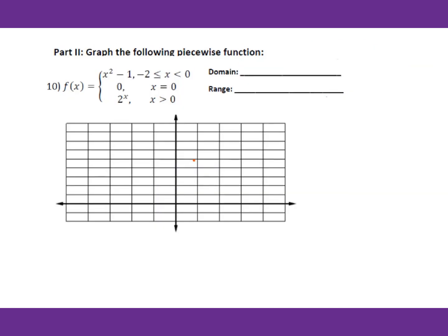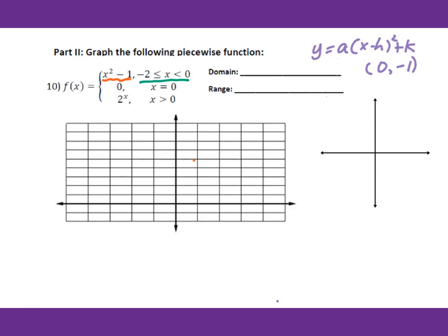Now let's go to number 10. We have x squared minus 1 when x is between negative 2 and 0. For a quadratic function, the vertex is very important. Vertex form is a(x minus h) squared plus k. For this function, the vertex is (0, negative 1). The graph is a parabola. We need to go from negative 2 to 0, with a closed circle at negative 2 and an open circle at 0.